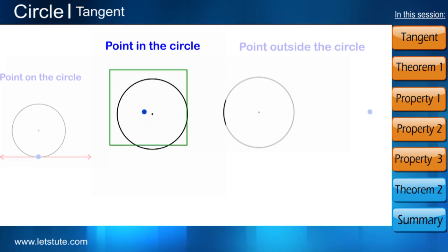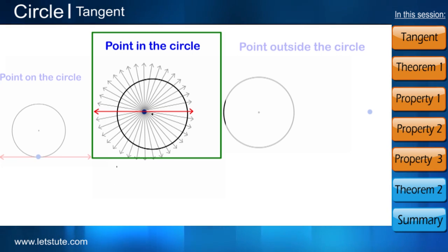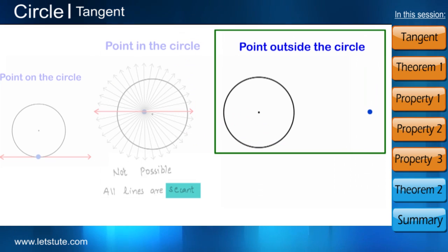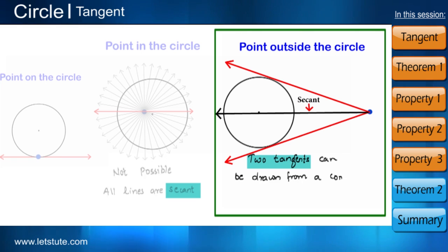In the first case, that is point inside the circle, when we try to draw a tangent, we can see it is not possible and all the lines which we try to draw touches the circle at two different points and they can be called as secant to the circle. In our second case, where the point is outside the circle, we can draw only two tangents from the external common point.